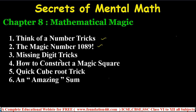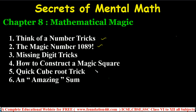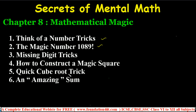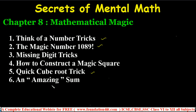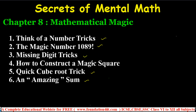I'll also explain the missing digit trick, how to construct a magic square — any square, 4×4 or 3×3 — and quick cube root: if any number is given, how to find the cube root, even for a three-digit or six-digit number. And one amazing sum puzzle. These are the concepts I'll explain in this chapter.